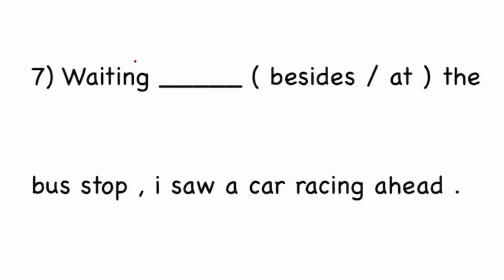Next is: waiting besides or at the bus stop, I saw a car racing ahead. So I already mentioned this before, besides means something in addition, and at refers to the place. The correct option is, waiting at the bus stop, I saw a car racing ahead.